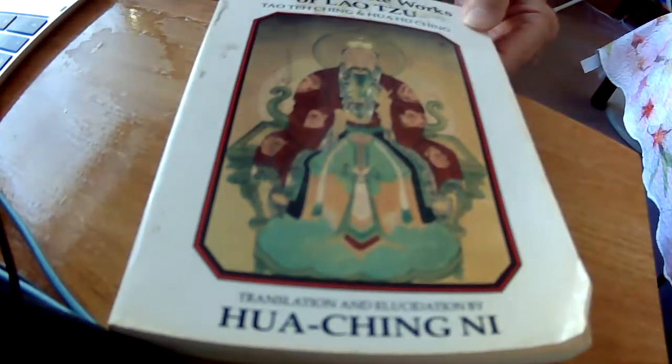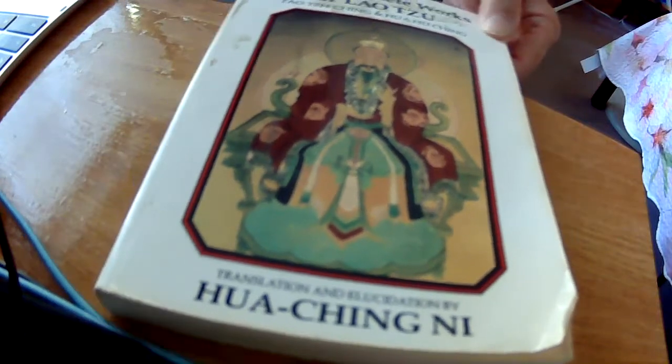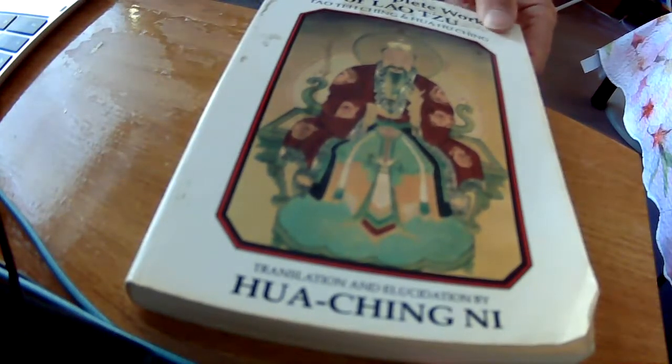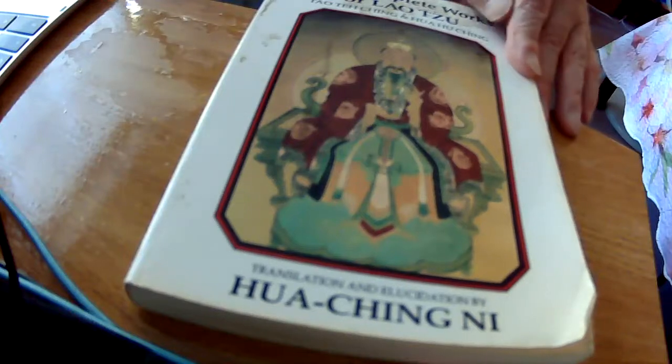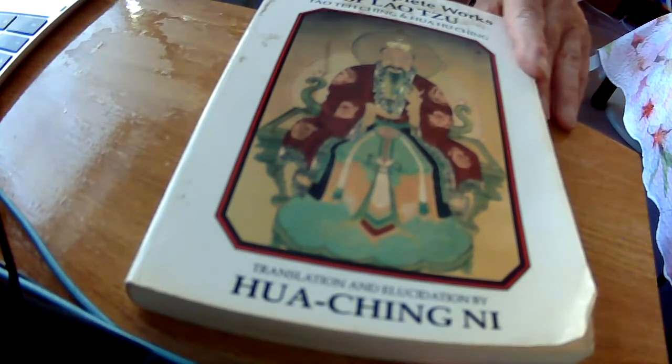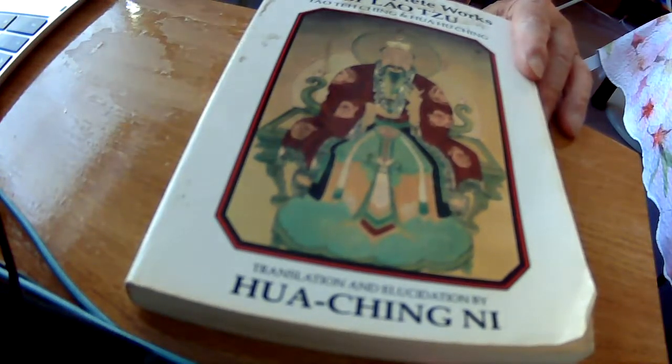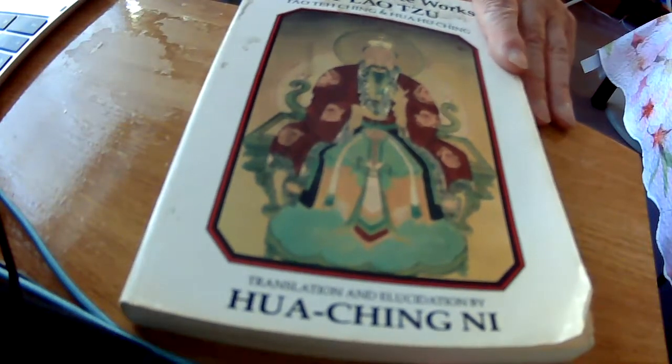Now, one thing about Ni was he came from a long ancestor list of those who were Taoist masters all the way back many years, and he inherited this whole tradition.